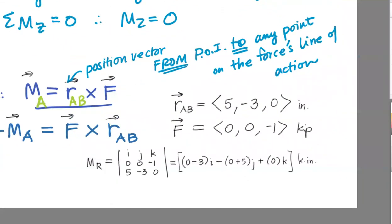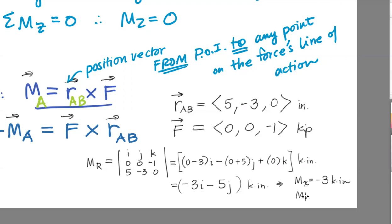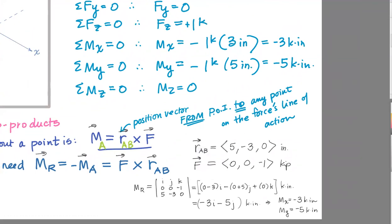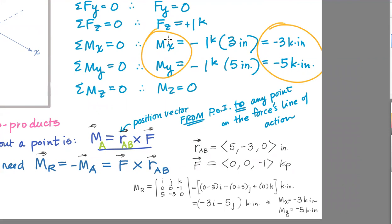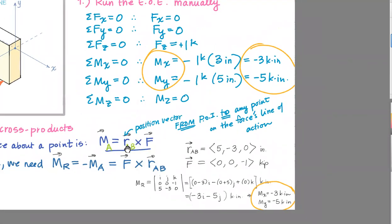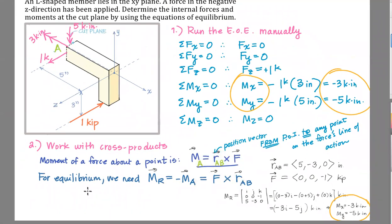Using the cross product to compute the reacting moment, this simplifies to −3I − 5J, which is a vector in kip-inches. In terms of its components: M sub x equals −3 kip-inches and M sub y equals −5 kip-inches. That is exactly what we determined up above — M sub x equals negative three kip-inches, M sub y equals negative five kip-inches. Either method works. I prefer the first method whenever the problem isn't too complicated; if I have lots of applied forces or moments, then I turn to cross products.